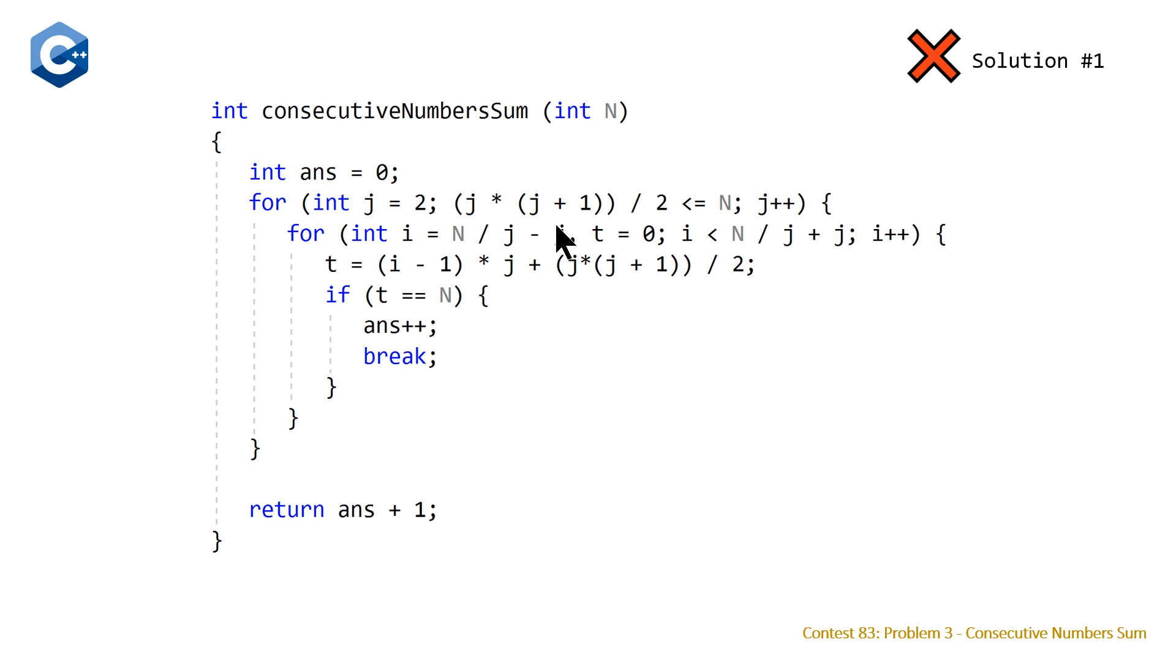We start for J equal to 2, and we're going to loop up to the length where J times (J+1) divided by 2 is always less than our input value N. So as soon as we have a sequence where we know that even starting from 1 it's going to be greater than N, we don't need to loop anymore.